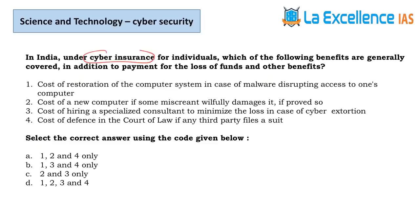The final question is about cyber insurance — a simple common-sense question. Statement 1 — cost of restoration of a computer system in case of malware disruption; yes, cyber insurance covers malware-related costs. Statement 2 — cost of a new computer if a miscreant willfully damages it physically; cyber insurance covers malicious software damage, not physical hardware damage. So the cost of a new computer would not be covered. Answer is B.